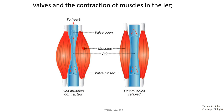Looking at the left-hand diagram, we have veins running between calf muscles. When the calf muscles contract, like all muscles they become shorter and fatter, and that causes the muscles to squeeze against the vein. This forces blood up the vein through the valve that has opened. There can also be a little backflow of blood, shown by the red arrows, but the valves at the lower position close and prevent that backflow.